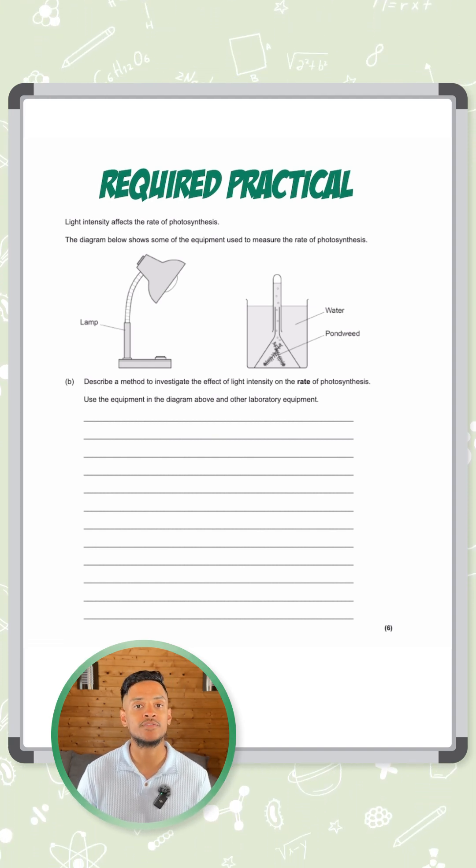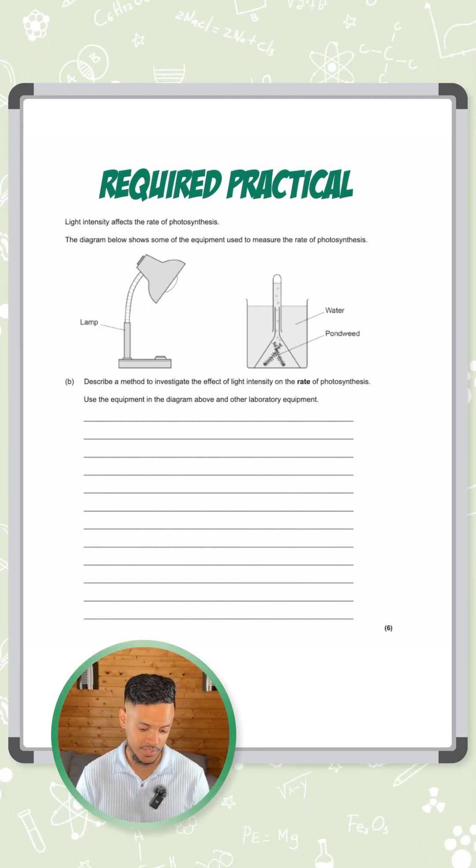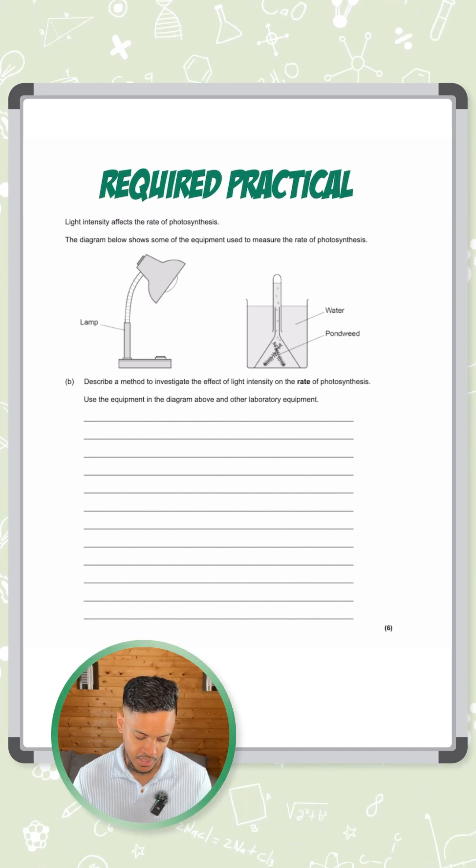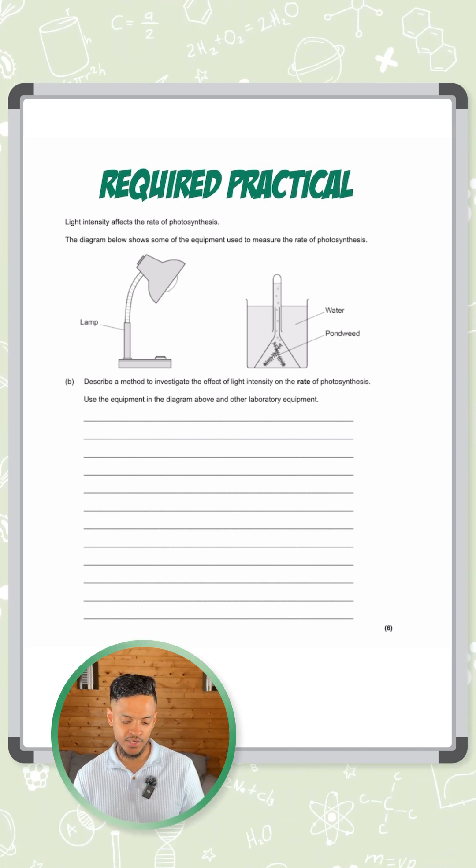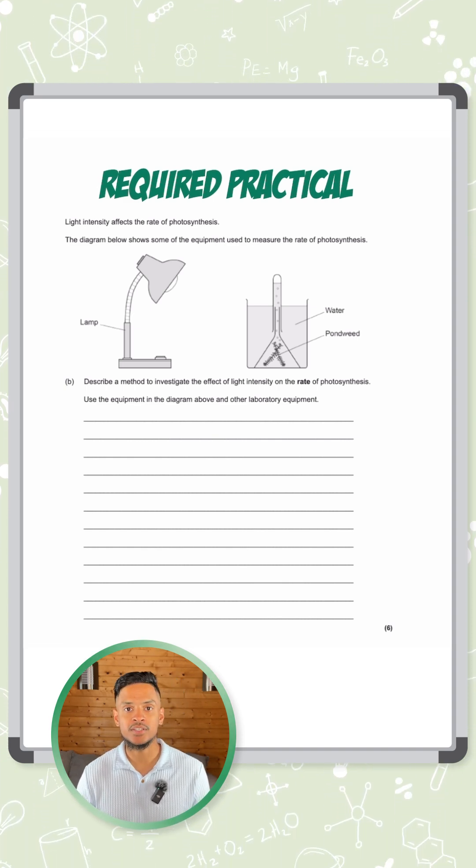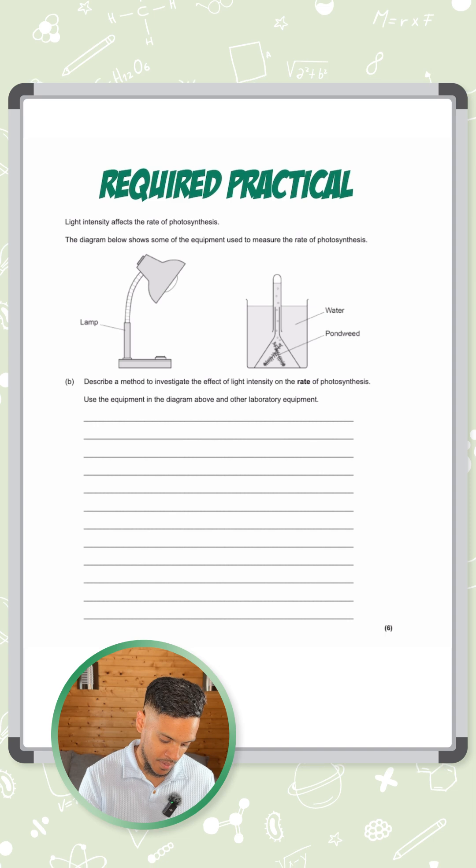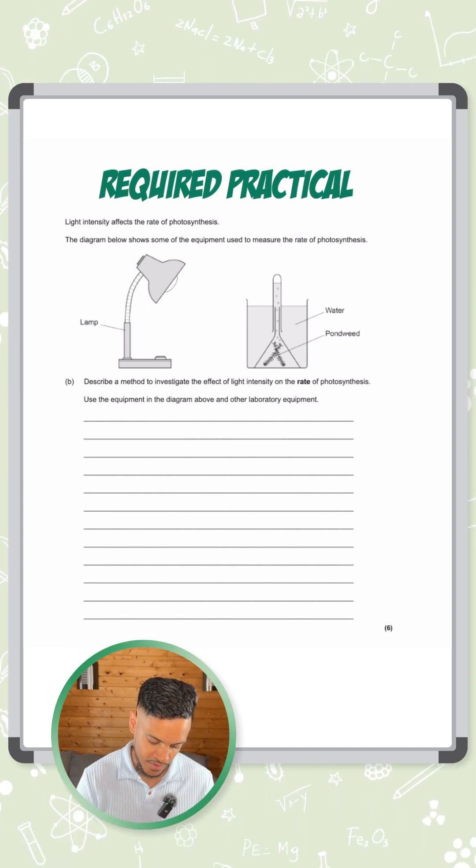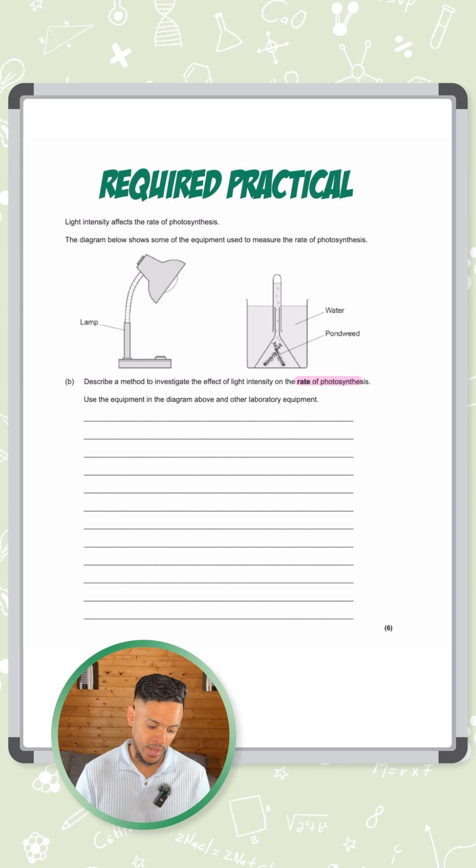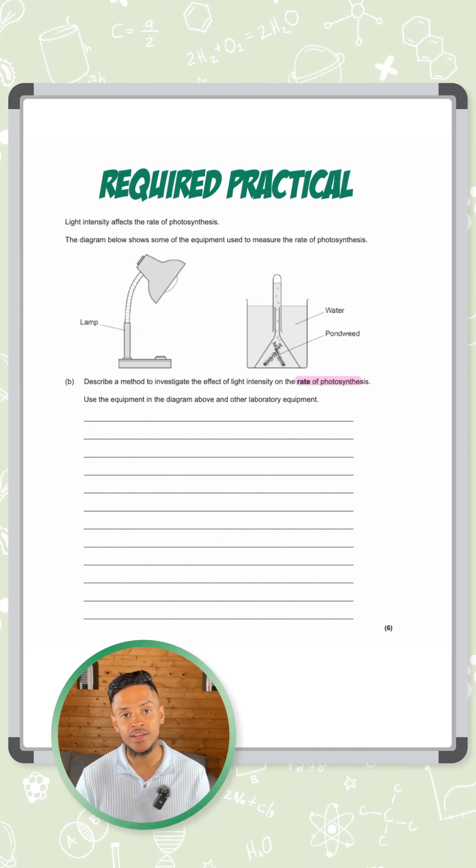There's quite a few different ways of measuring photosynthesis. This one has a lamp and an inverted conical flask in water with the pondweed in the water and an inverted test tube. It says describe a method to investigate the effect of light intensity on the rate of photosynthesis and you have to use the equipment in the diagram.